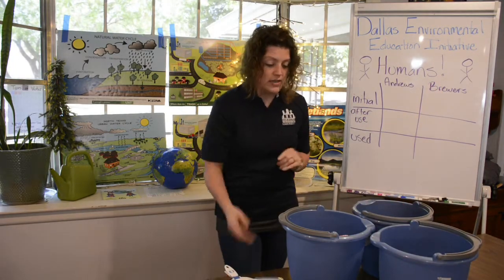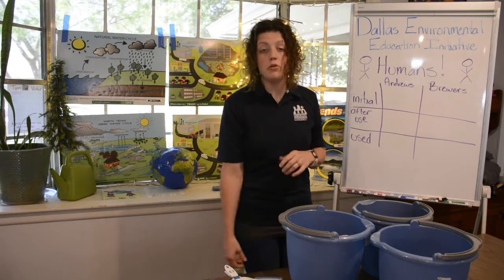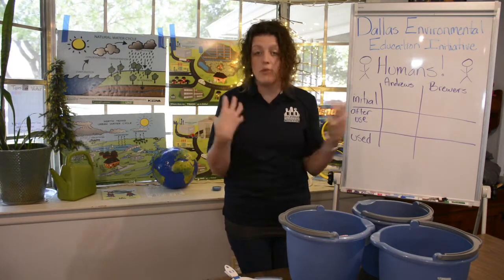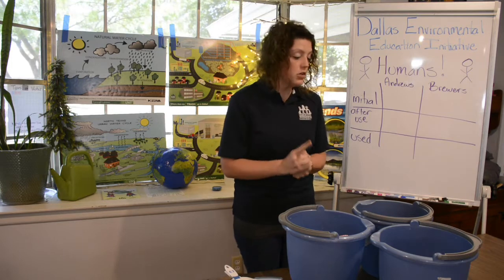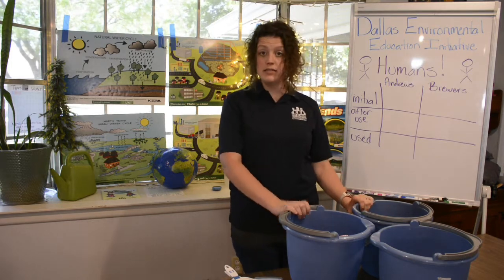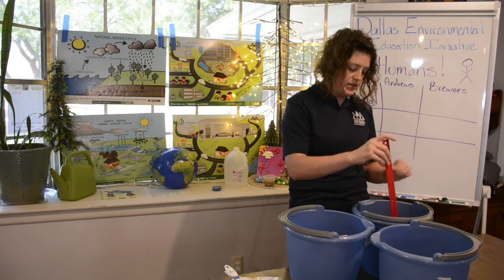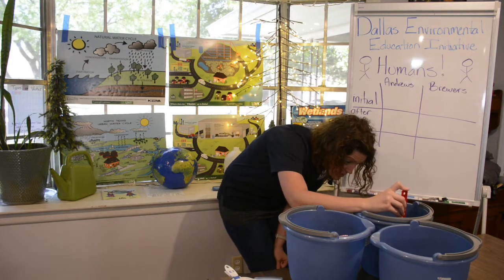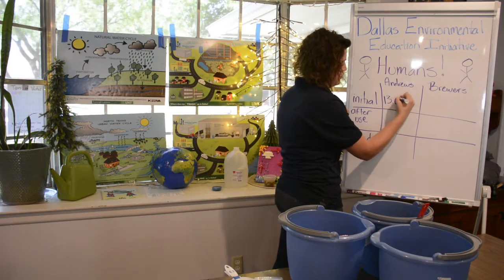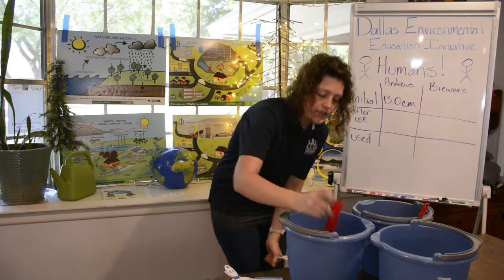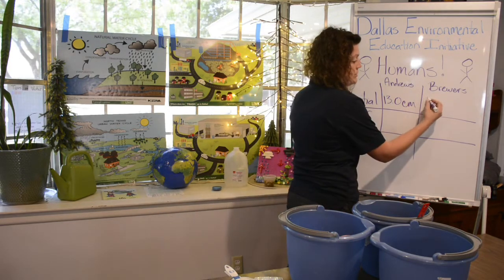The first thing we need to know is how much water each of these families has. If you remember, we talked a little bit about lake levels. In Texas, we're very prone to drought, so our lake levels tend to go down when we have a lot of evaporation going on. When we get rain, maybe they come back up. We monitor those things constantly. So the first thing we need to do for our two families is figure out their lake levels. We're going to measure in centimeters. Each of these buckets has a ruler. The Andrews family bucket on my left is 13 centimeters, and the Brewers' lake has 13.5 centimeters. This is their initial lake level before we make any changes.